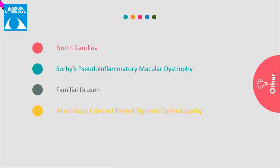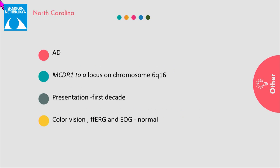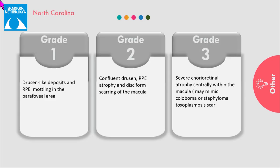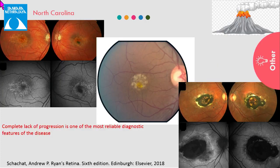Moving on to North Carolina macular dystrophy: it is an autosomal dominant disease first identified in a group of settlers in a mountainous region of North Carolina. They generally present with diminution of vision in the first decade with bilateral symmetrical fundus appearance. There are three grades. Grade 1: diffuse drusen-like deposits. Grade 2: confluent drusen. Grade 3: severe chorioretinal atrophy centrally surrounded by a thick fibrotic rim.